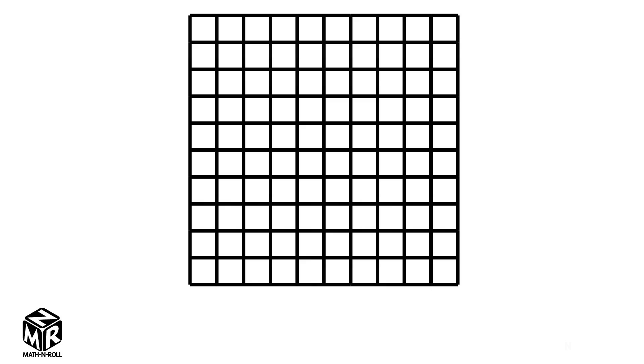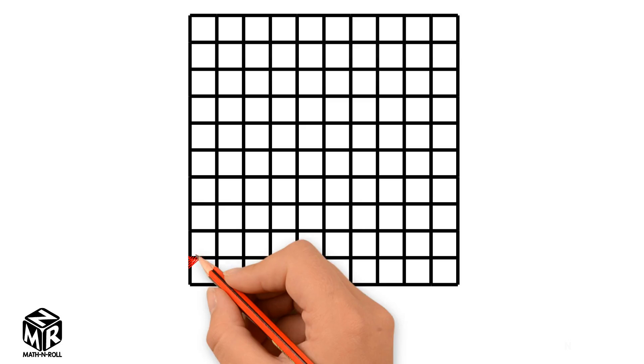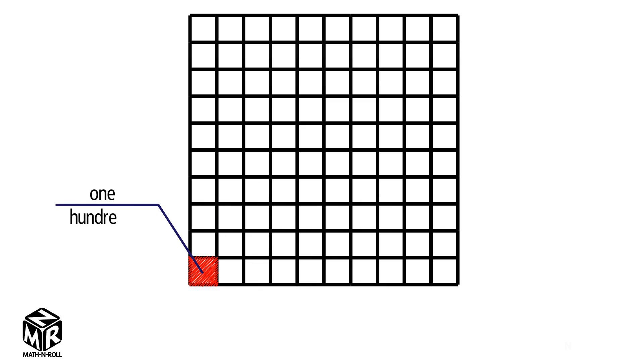Relate hundreds and decimals. Here we have a model divided into 100 parts. This model has 10 rows and 10 columns. Each part represents one hundredth. We can write one part as a fraction: one hundredth.